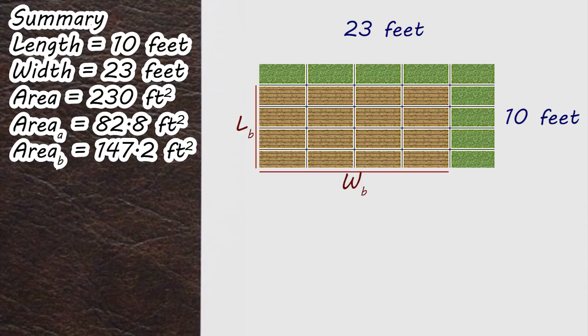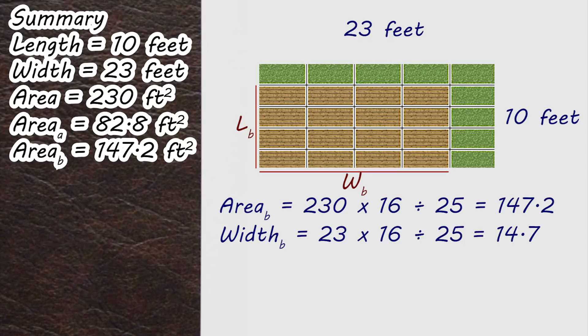This is where the question is again deliberately counterintuitive. You would expect that if you're going from a whole patio to 16 over 25 of the patio, you would just find 16 over 25 of the side. However, because our scaling down refers to the area, it doesn't affect the length in the same way.